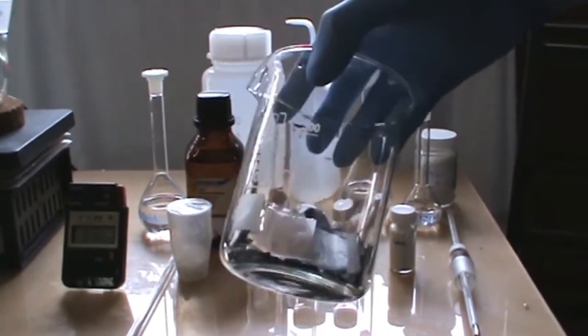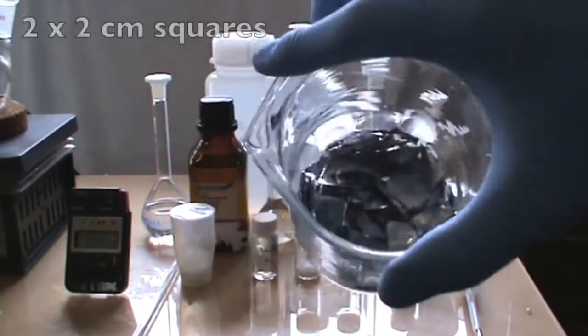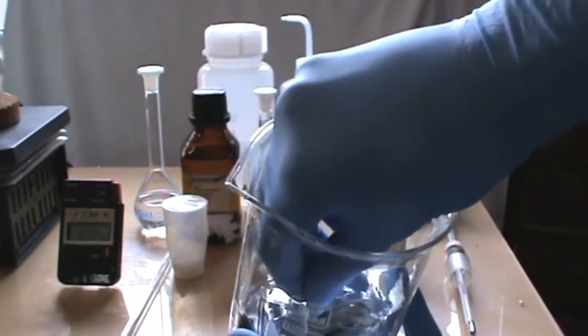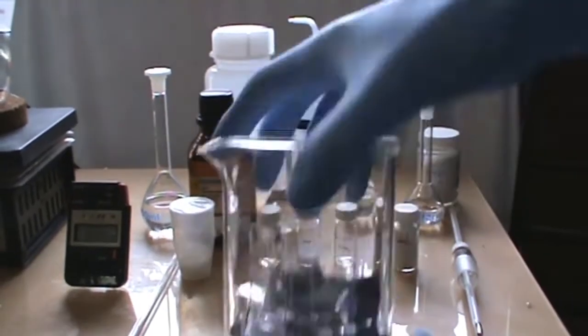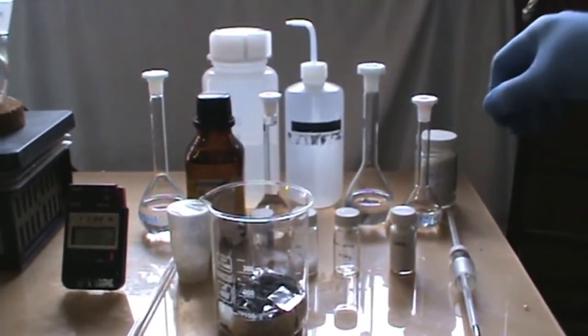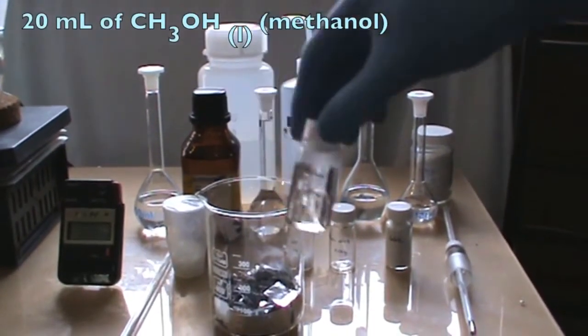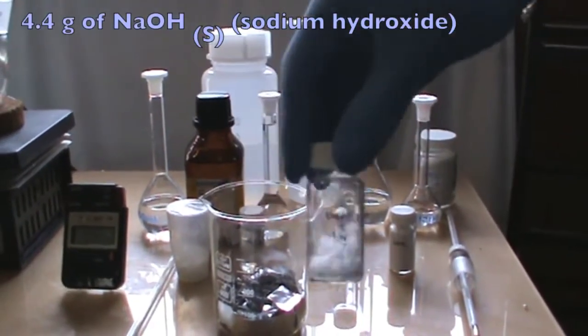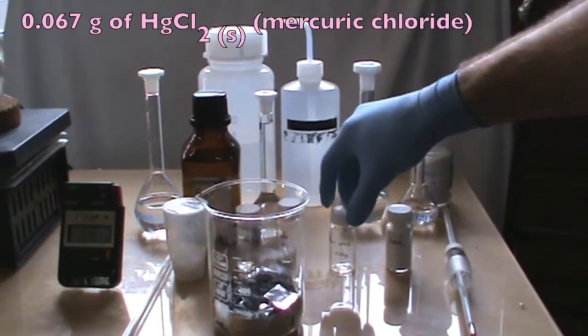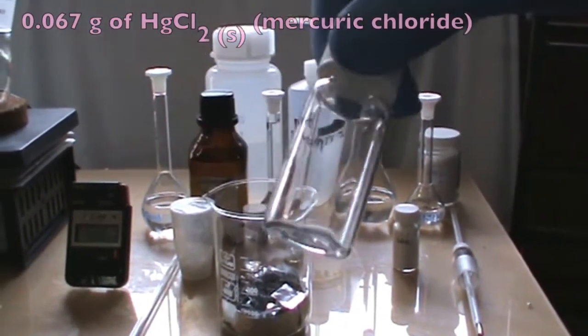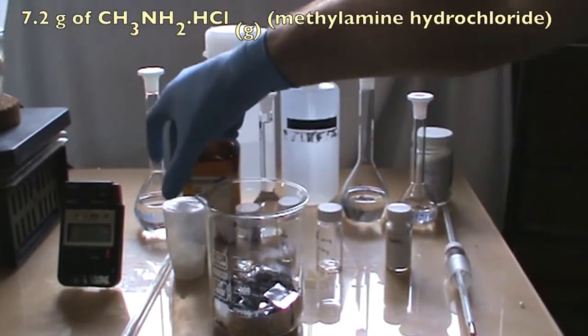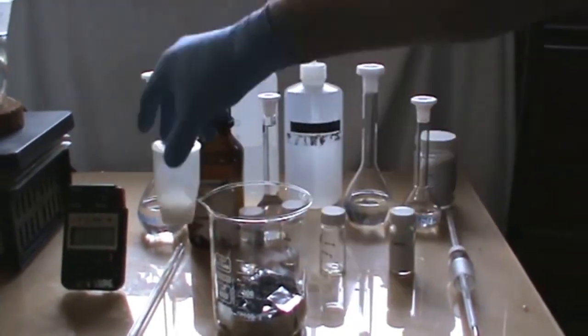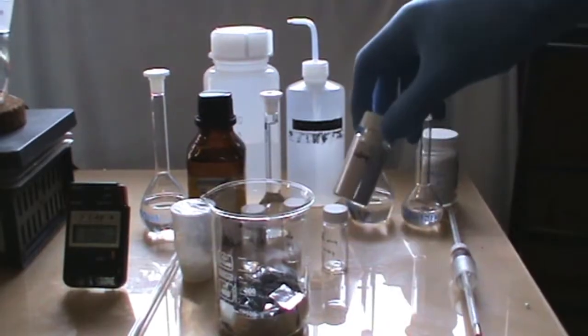To start the synthesis, we need 2.9 grams of aluminum foil cut into 2cm squares. The aluminum foil I used was brought from the local grocery store. 20 ml of methanol, 4.4 grams of sodium hydroxide, 0.067 grams of mercury chloride, 7.2 grams of methylamine hydrochloride I made from the previous video.